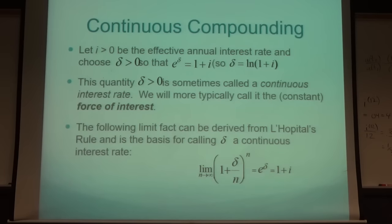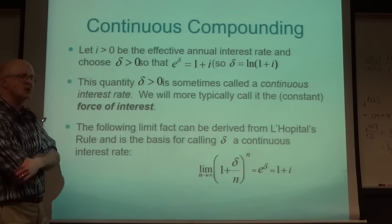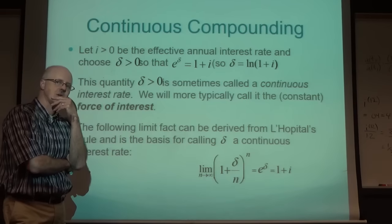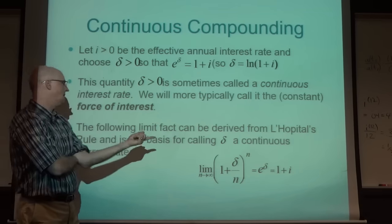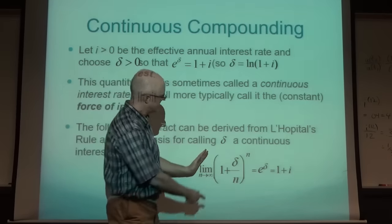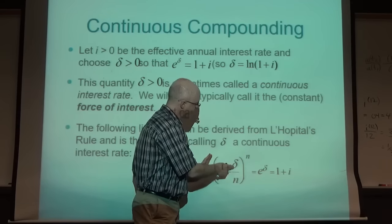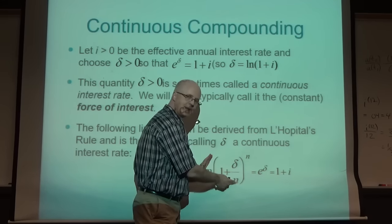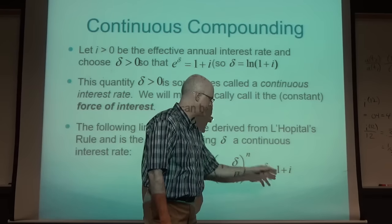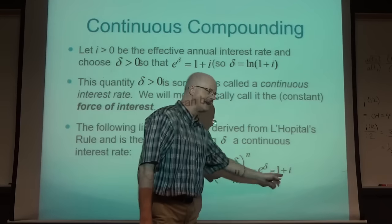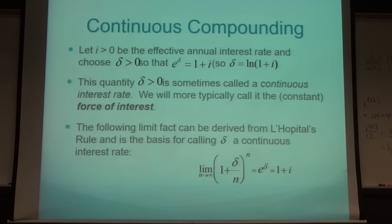The basis for calling delta a continuous interest rate is this limit: you can think of (1 + delta/N)^N as the future value of 1 after 1 year when the nominal interest rate is delta compounded N times per year. Letting N go to infinity (compounding periods go to infinity), this limit equals e^delta = 1+i. The quantity 1+i is called the annual growth factor, and delta is the force of interest.